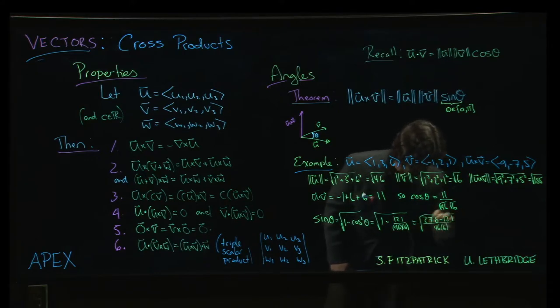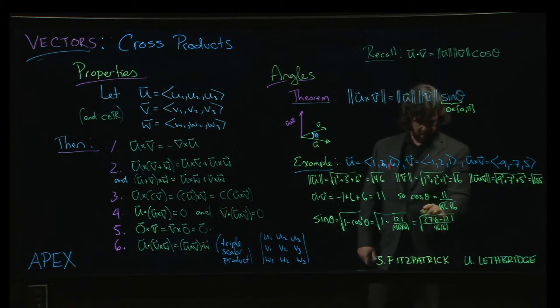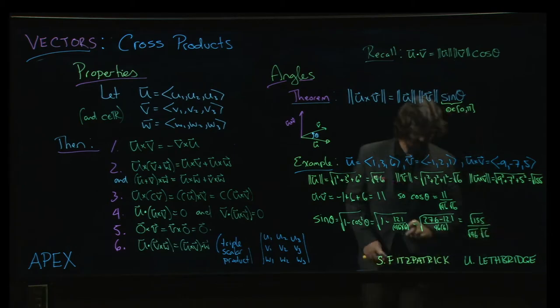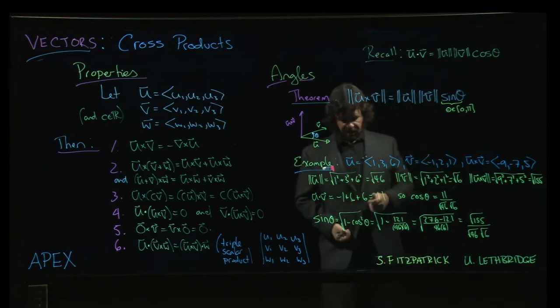Well, under the square root. So when we subtract that off, we're going to get square root of 155 over the square root of 46 times the square root of 6. Okay. So there's sine theta.